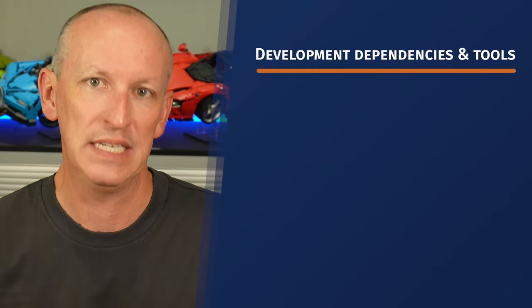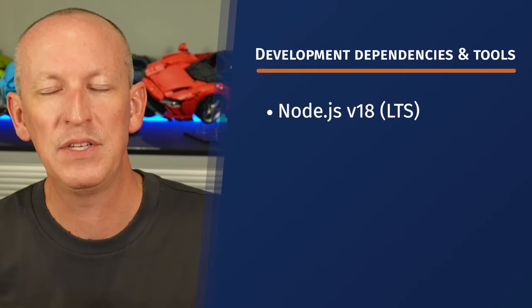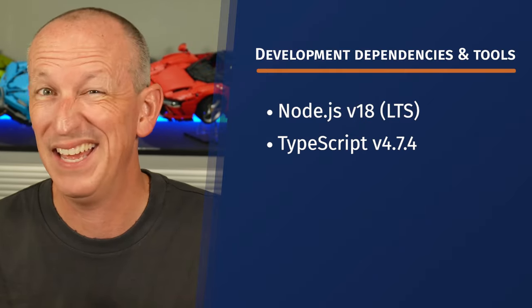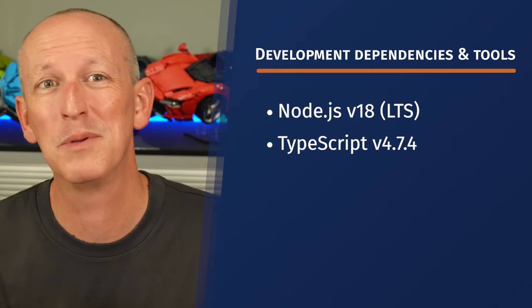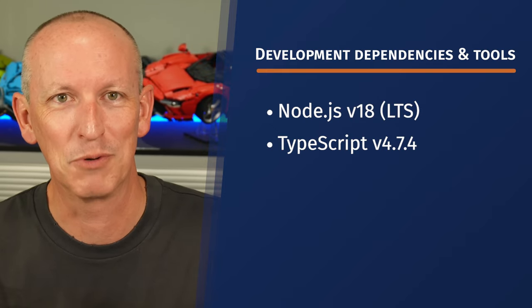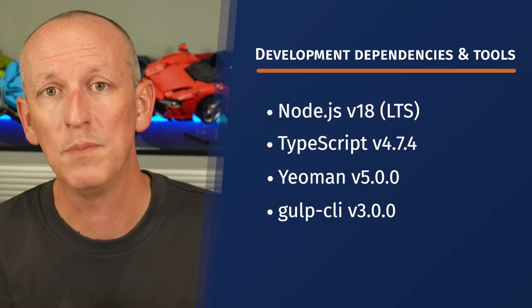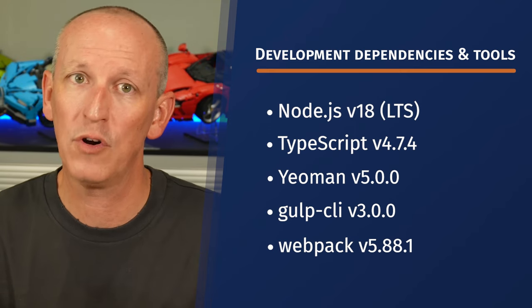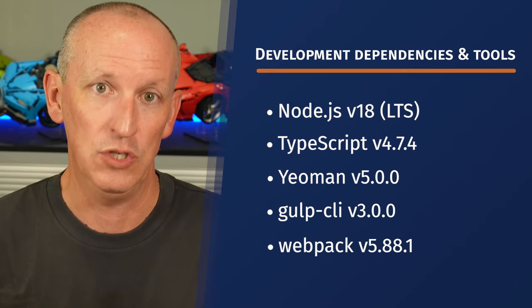For development dependencies: Node.js version 18 is the only supported version. TypeScript is version 4.7.4 — about two years behind the latest. Yeoman is version 5, the Gulp CLI is version 3, and Webpack is version 5.88.1. These are all the versions the current SharePoint Framework is using.